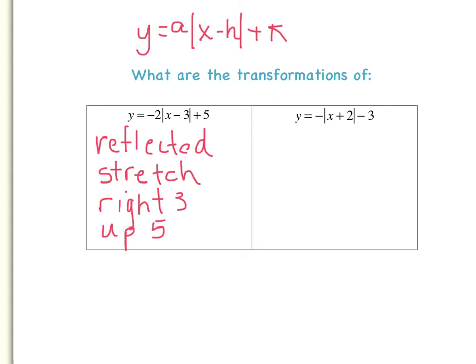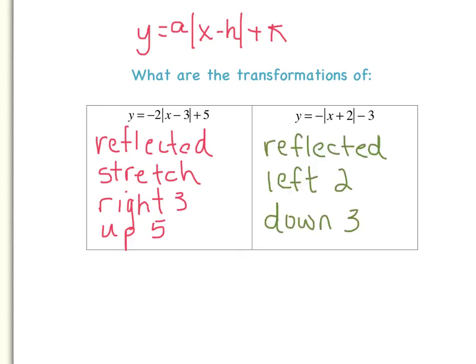Now you try the next one — pause the video, see if you can get all the transformations, then come back and check your work. For the second example: the a value is negative 1, so it is reflected but neither a vertical stretch nor shrink. The h value is negative 2 — since the formula uses x minus h, seeing x plus 2 means h is negative 2, so you shift left 2 units. The k value is minus 3, so you shift down 3 units. That's everything you need to know about transformations of absolute value functions. I hope this video has helped!